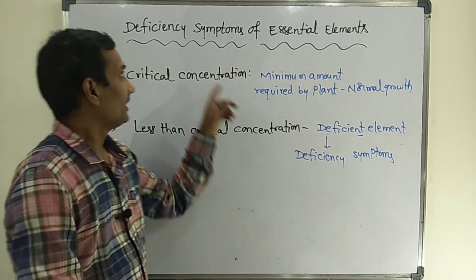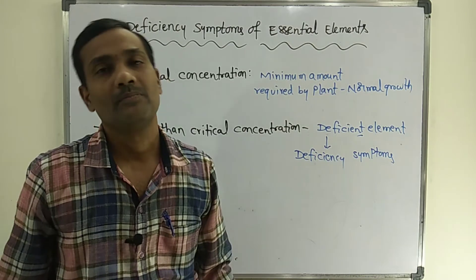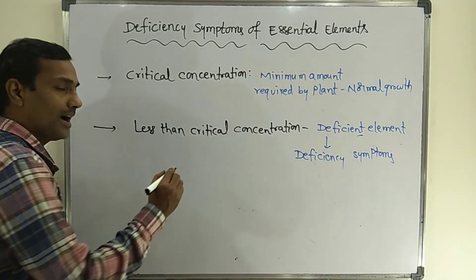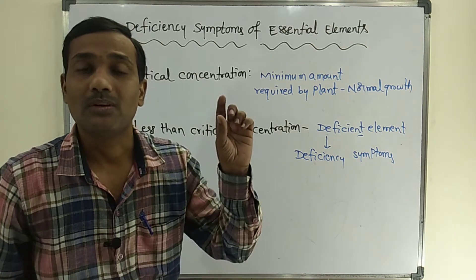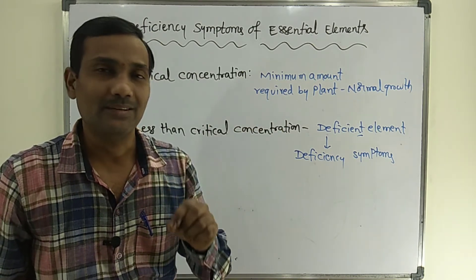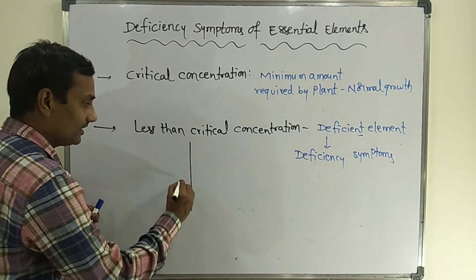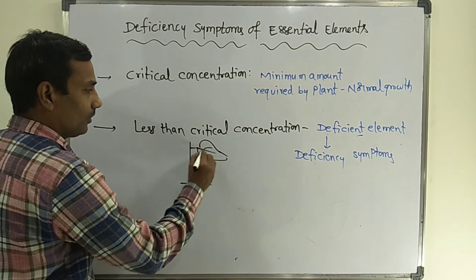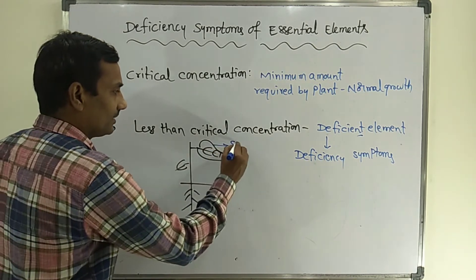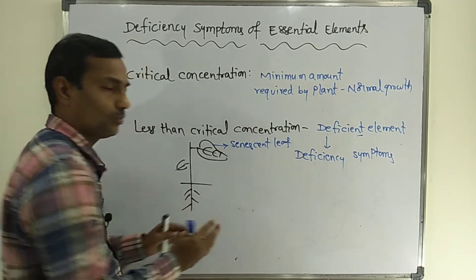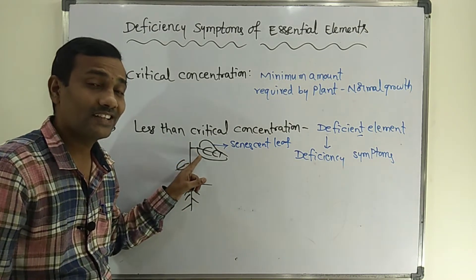There will be different symptoms in plants because of different essential elements. There are mobile — that is, movable — elements. These move from senescent leaves to young leaves. The first symptoms appear in senescent leaves. For example, taking one plant: the senescent leaf is the old, completely mature leaf that is going to detach from the plant, while the young leaf is the developing leaf.